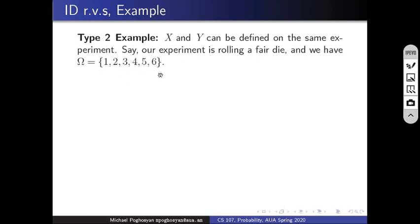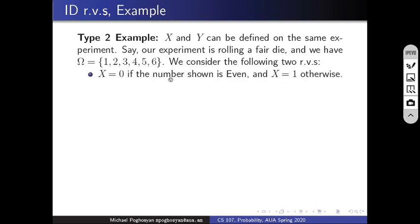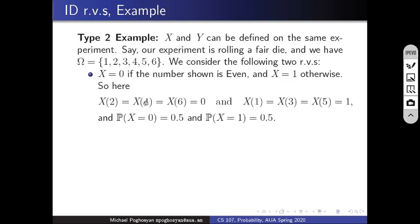Our experiment is rolling a fair die with sample space {1,2,3,4,5,6}. Let X = 0 if the number shown is even, and X = 1 otherwise. So X(2)=X(4)=X(6)=0 and X(1)=X(3)=X(5)=1. P(X=0) = P(rolling 2,4, or 6) = 0.5, and P(X=1) = 0.5. So X is Bernoulli(0.5).